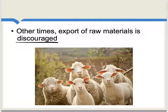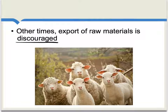Smith gives some striking examples of just the lengths that regulation went to in order to discourage the export of wool in England. He talked about how wool, by law, could not be packed in any box, barrel, cask, case, chest, or any other package. You had to pack it in leather or pack cloth, and you had to put the words 'wool' or 'yarn' on the outside in large letters not less than three inches long. Furthermore, it was illegal to load the wool onto any horse or cart or carry that wool by land within five miles of the ocean — only between sun rising and sun setting — on pain of forfeiting the wool, the horses, and carriages.